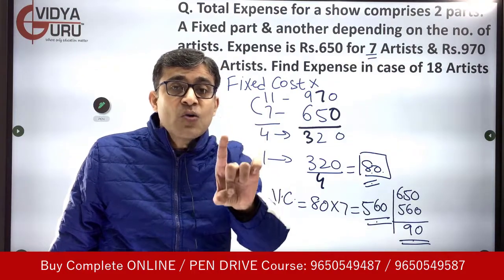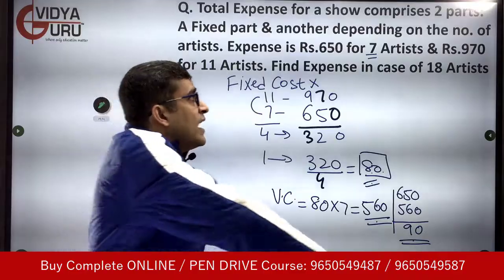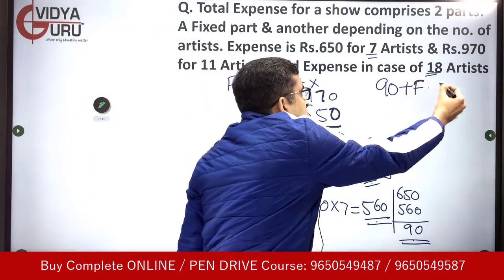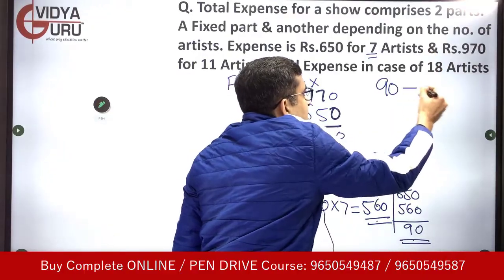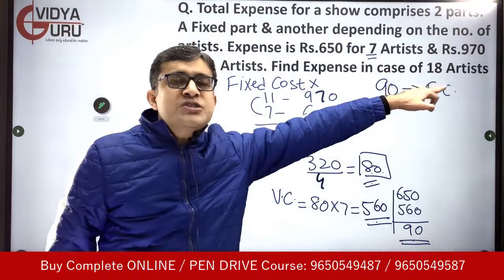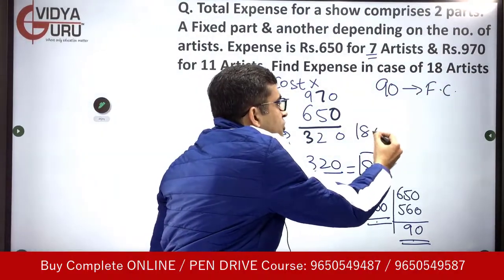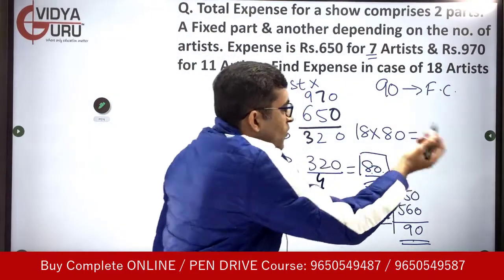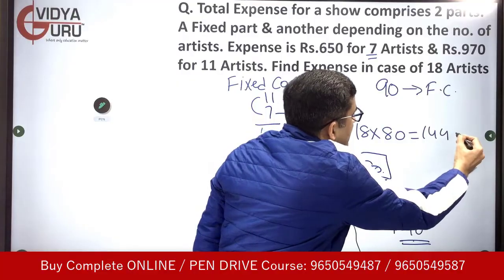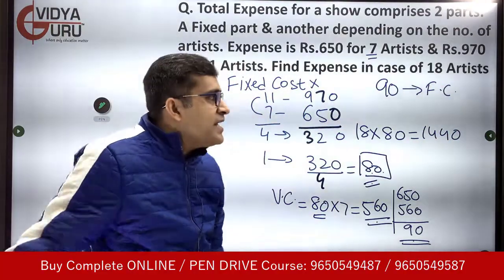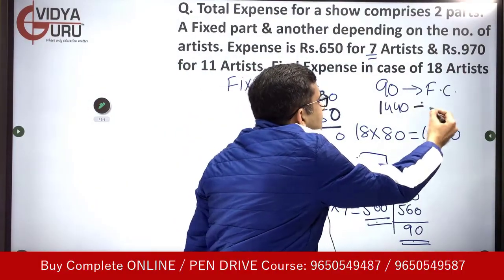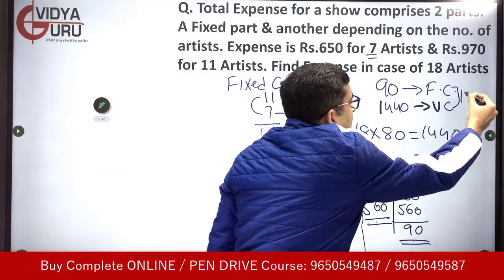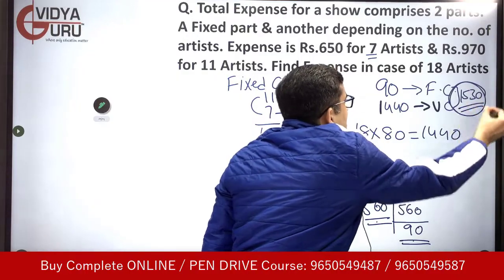We have to find the expense for 18 artists. The fixed cost is Rs. 90. For 18 artists, the variable cost is 18 into 80, which equals Rs. 1440. Adding fixed and variable cost: Rs. 1440 plus 90 gives a total of Rs. 1530. The answer is Rs. 1530.